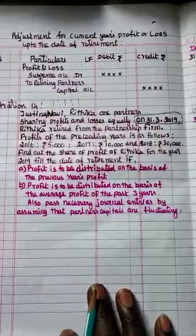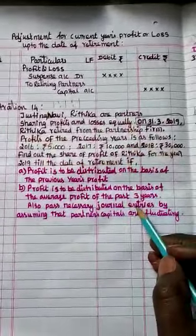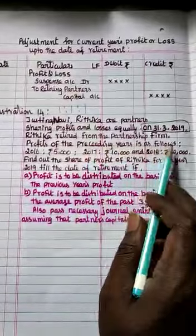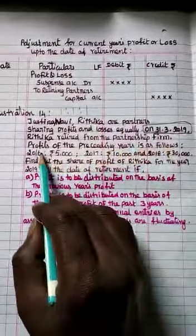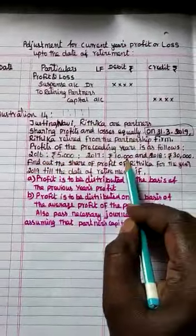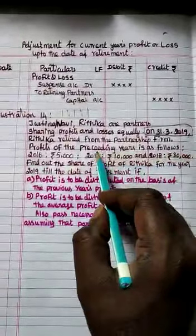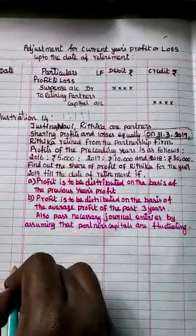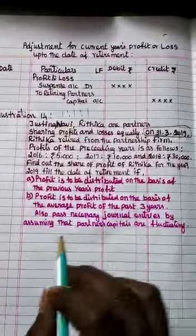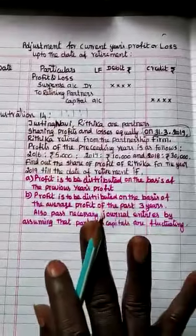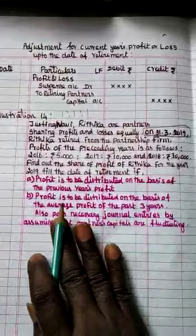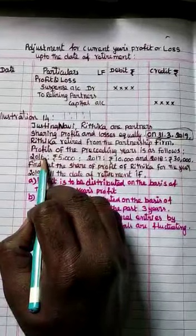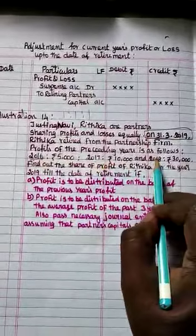Since the academic year is not mentioned, we continue reading the sum to draw a conclusion. Profits of the preceding years are given: 2016, 2017, and 2018. They didn't mention '1st April to 31st March' — they just gave 2016, 2017, 2018, which means the academic year is 1st January to 31st December. So the academic year runs January to December.